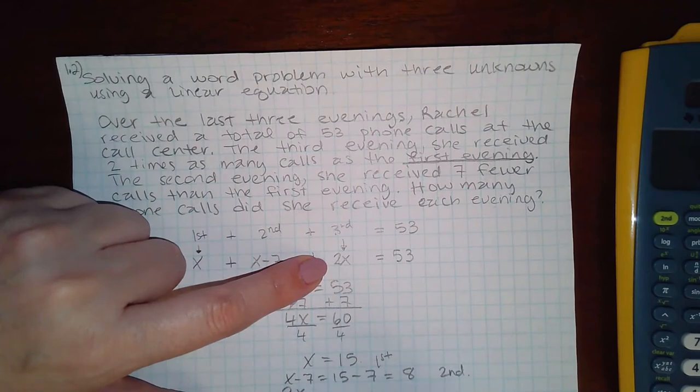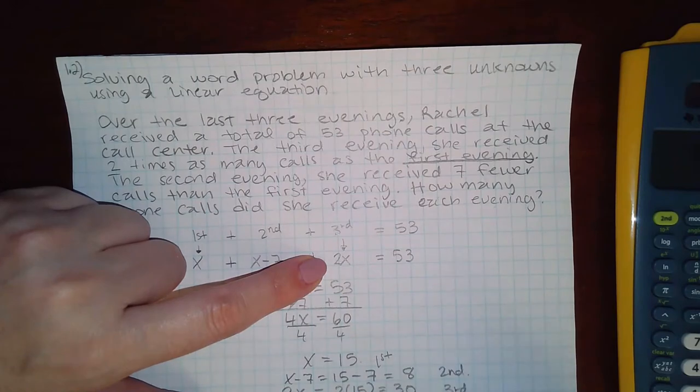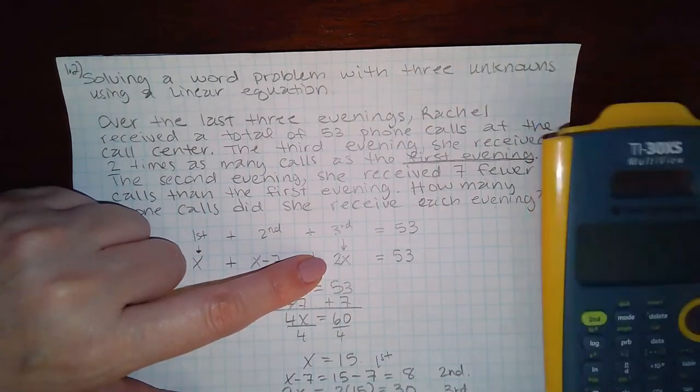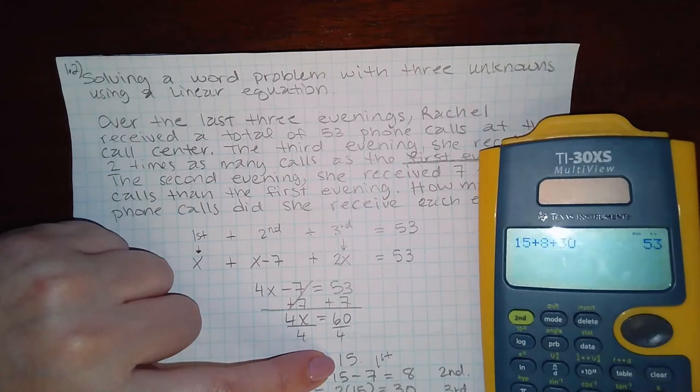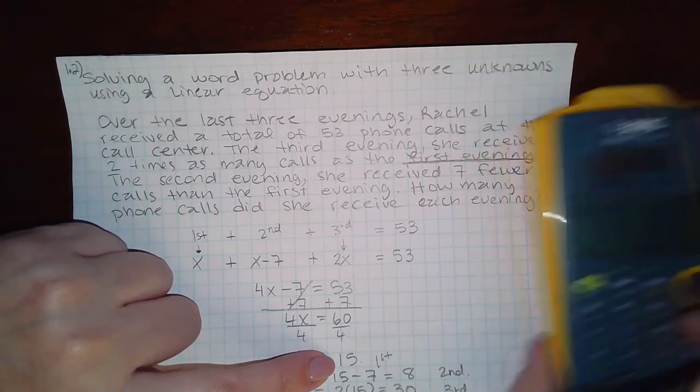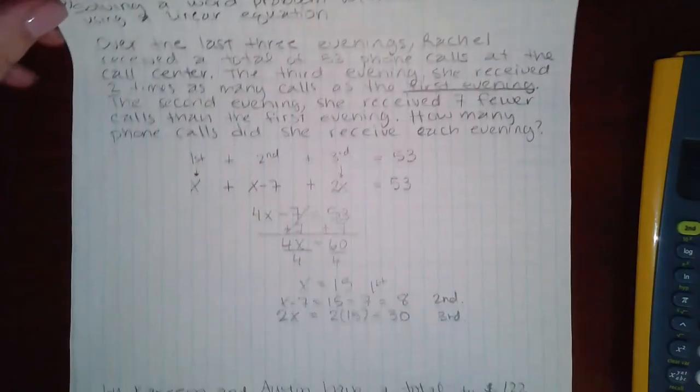And then 2x, which is two times 15, which equals 30, is how many calls she received on the third night. And if you double check your answer just to make sure that all these numbers add up to equal 53, it does in fact equal 53. So we are good to go there.